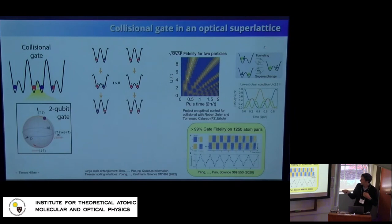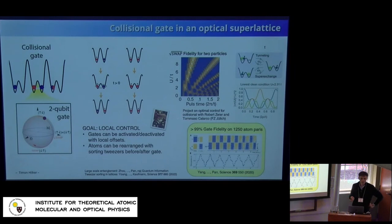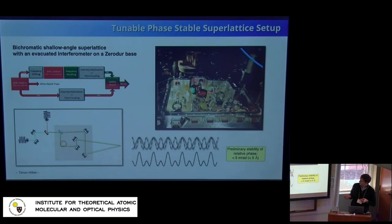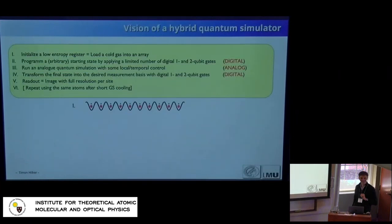A beautiful experiment in Heidelberg in John Weitenberg's group in 2020 already achieved fidelity above 99% for this kind of collisional gate — the technology is definitely there. What's missing is integrating it into existing many-body quantum simulators with local programmability. Our plan is to use a DMD or additional tweezers to move particles and make this process local. The key element is a superlattice — we've been building a new bichromatic lattice with a phase-stable interferometric setup in vacuum on a zero-order dual plate, targeting very high phase stability.